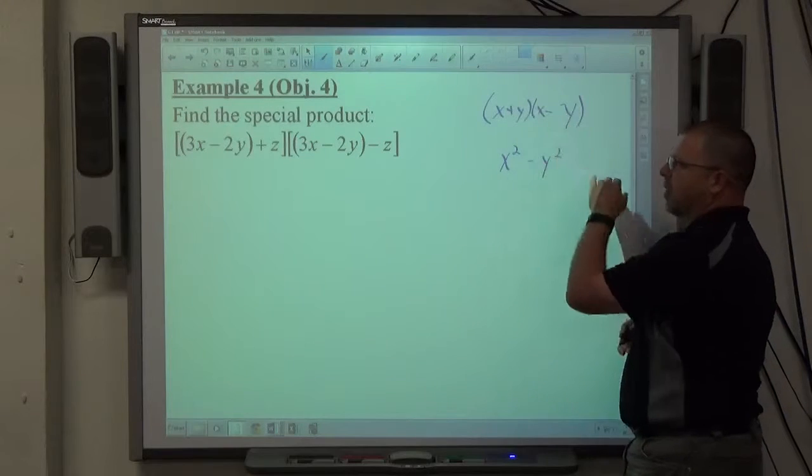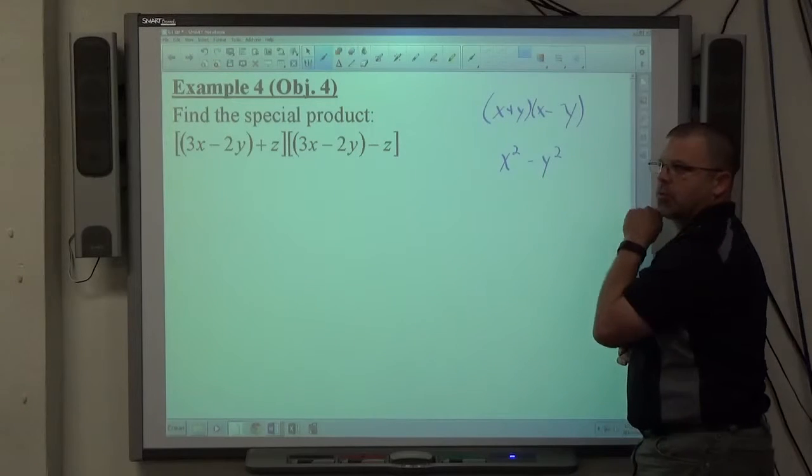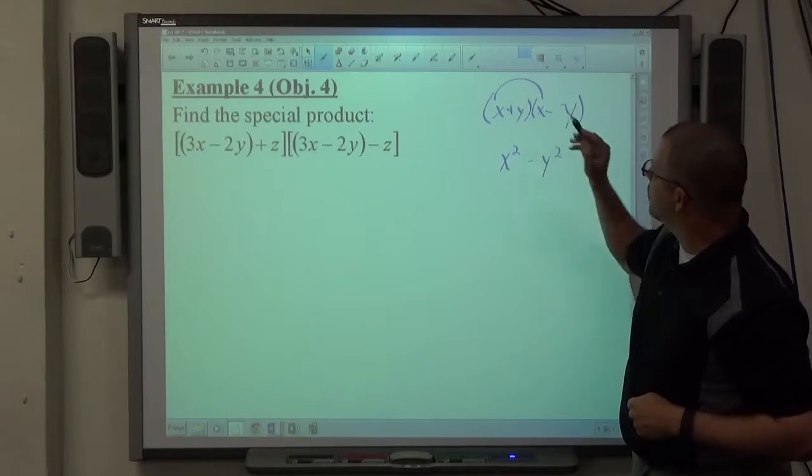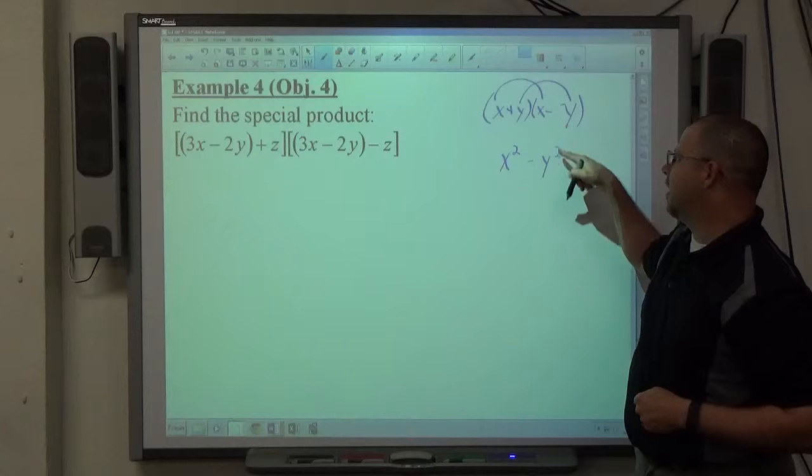You see a sum and difference of the same two objects, square of the first, square of the second, subtract. The reason that happens, if you FOIL it, first times first gets to the positive x squared, last times last gets to the negative y squared.